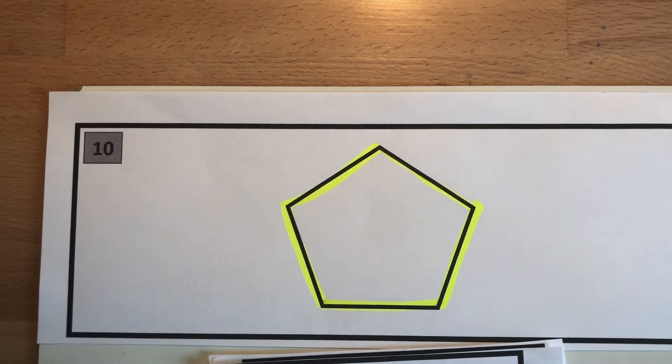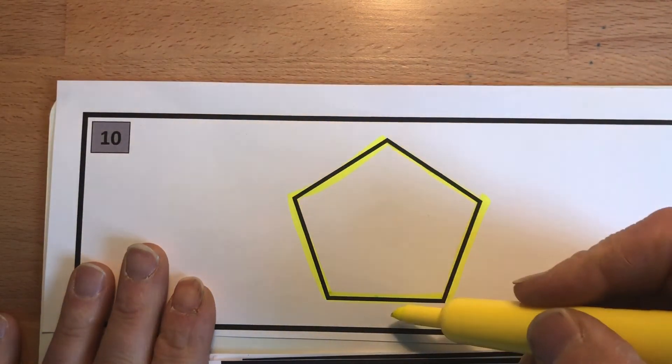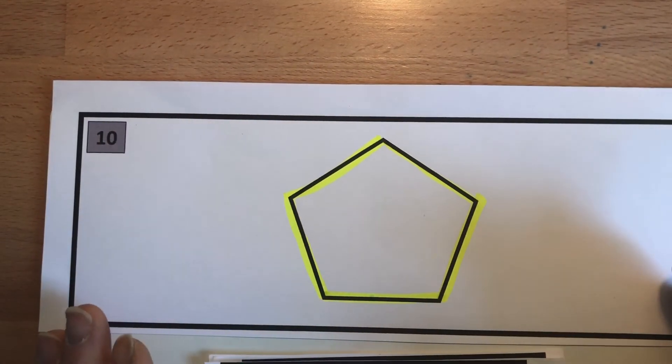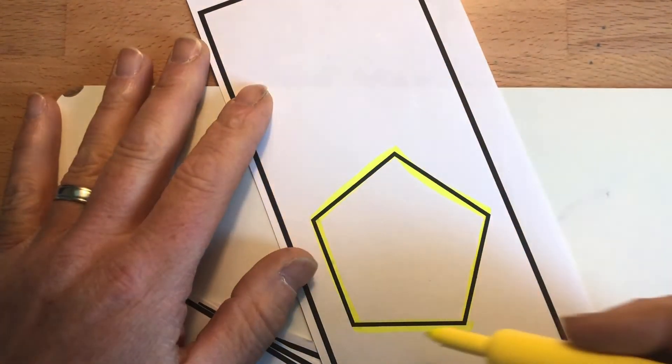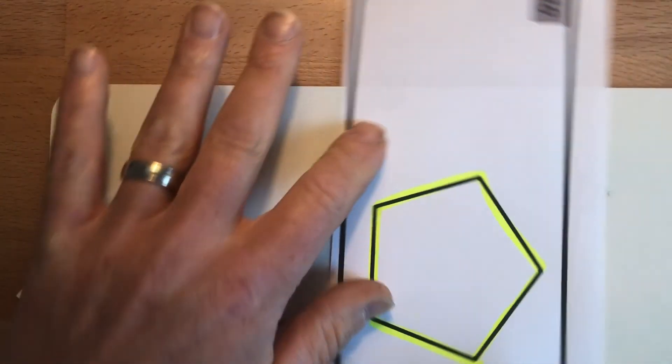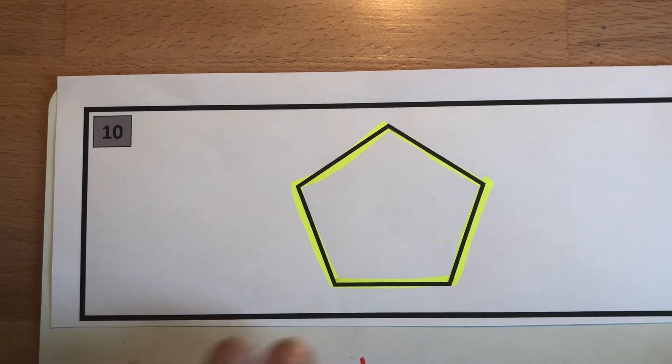You also maybe talked about symmetry, lines of symmetry. When I look at this, I can see one here right, I can just fold it over and it would be the same. I could probably do it this way and I could probably do it this way. So I'm thinking it's got three lines of symmetry here. Maybe it's got more, maybe you looked at it a little bit deeper than I did.